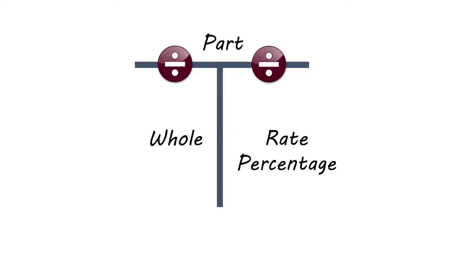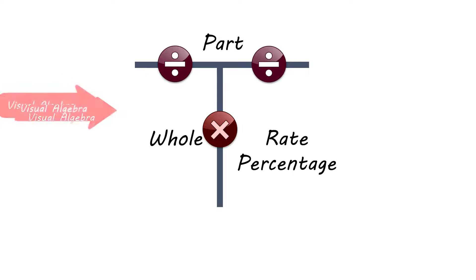The horizontal bar indicates that we divide. The vertical bar indicates we multiply. What we have here is a tool — a visual algebra tool. After all, most real estate math is just basic algebra. The T-bar takes dozens of formulas that you need to remember and combines them into one simple method. The T-bar is used the same way every time. It takes away the mystery of: do you multiply or do you divide? Which number goes in the calculator first, etc.